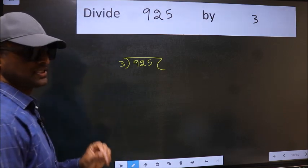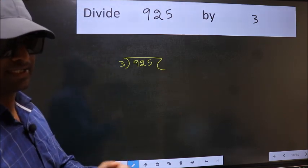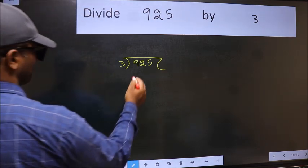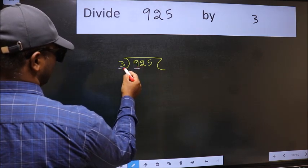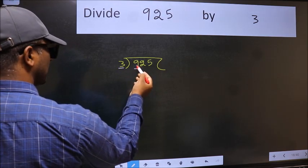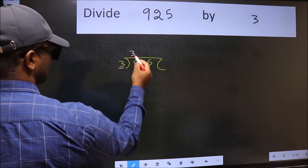This is your step 1. Next, here we have 9 and here 3. When do we get 9 in the 3 table? 3 times 3 is 9.